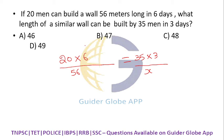can be built by 35 men in 3 days? Okay, cross multiplying: 20 times 6 equals 56 times 3. 35 times 3 equals x. Solving: x equals 7 times 7, which is 49. The answer is 49 meters.